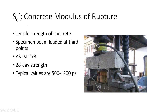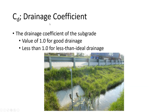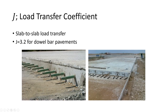The modulus of rupture you should know from your materials class. For drainage: if you have under-drains designed in from the start letting water out from the base layer, you'll use a drainage coefficient of 1.0 for good drainage. Without any drainage provisions, use something less than 1.0. For the load transfer coefficient J: if you have dowel bars in your pavement, use a factor of 3.2.